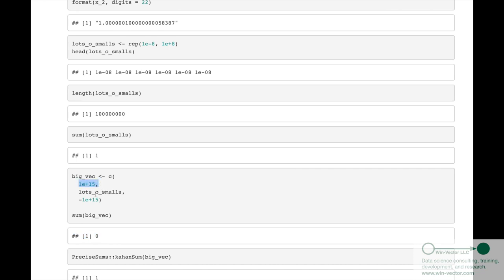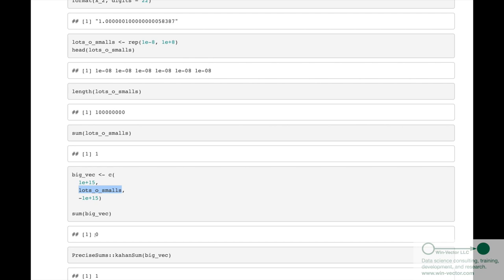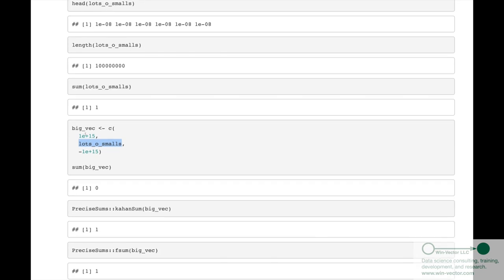This should sum to 1. This should cancel this. And, therefore, we should get just this sum, which we previously showed sum to 1. However, notice we get a sum of 0. This is because just adding up the numbers in order doesn't always work for floating point.